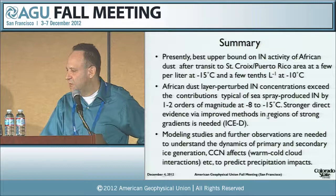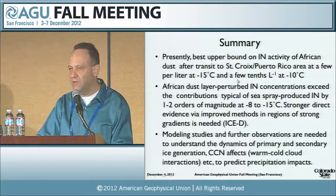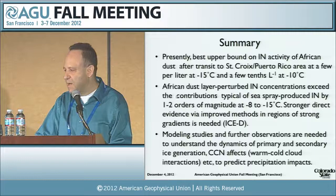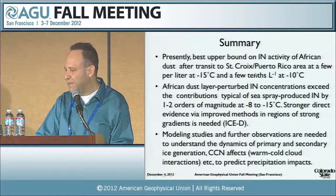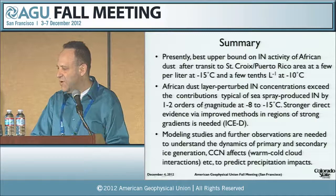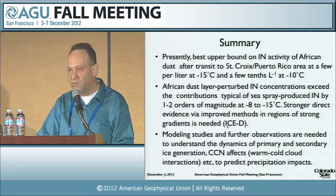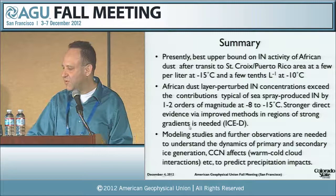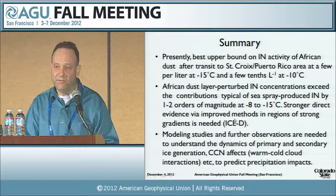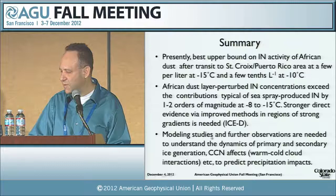To summarize: if I had to put an upper bound on the ice nucleation activity of African dust transiting to the Caribbean region, it'd be a few per liter at minus 15 in these dust layers being ingested into clouds, perhaps a few tenths per liter at minus 10. These perturbed layers exceed ice nuclei concentrations from sea spray aerosols by one to two orders of magnitude, even in this relatively warm temperature regime. We need stronger direct evidence via improving our methods, getting better statistics, and going to regions with even stronger gradients — for example, right off Africa — in a project called ICE-D proposed for 2015.